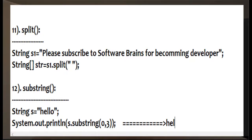For substring: given String s = "hello", calling s.substring(0, 3) returns "hel" — it considers indices 0, 1, and 2 but not 3. So 0 is 'h', 1 is 'e', 2 is 'l', giving "hel". If you use substring(0, 4) it would give "hell" — the end index is exclusive. These are the most commonly used String methods.